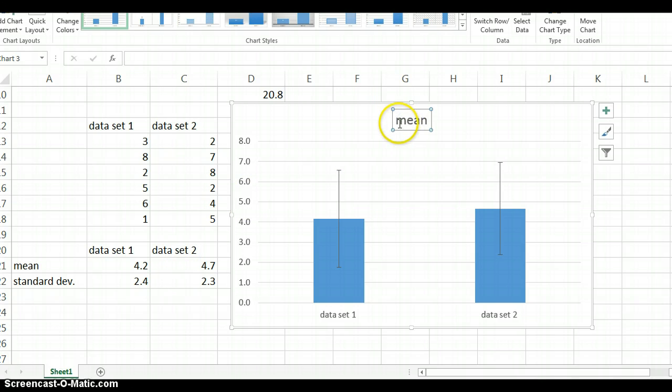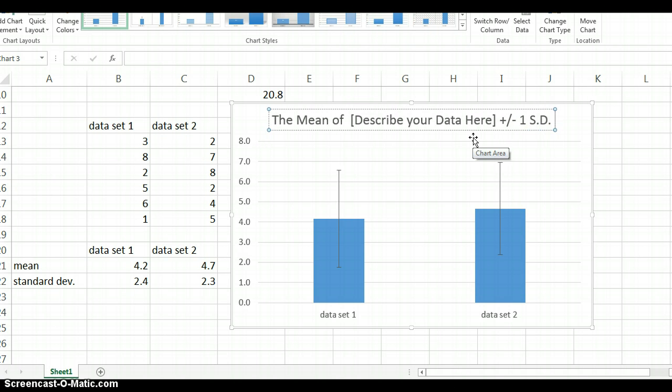Now, since we have those standard deviation bars in there, we definitely want to note that in our title. And you need a much more descriptive title than mean. Okay. Now, you want to also write plus, minus, one standard deviation. This lets your viewer know what these bars, these error bars are showing. Okay. Now, this is still not enough information. We have no label on the x-axis. We have no idea what this is.